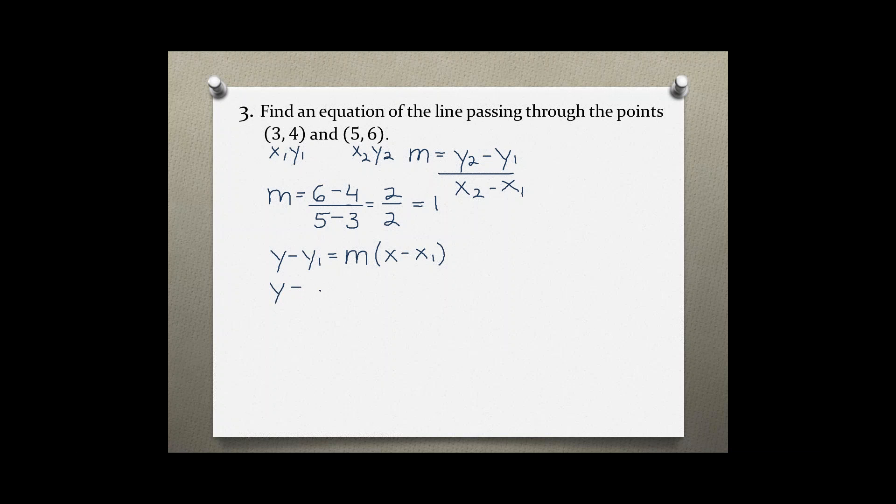y - y₁ is 4, equals my slope is 1, times (x - x₁).